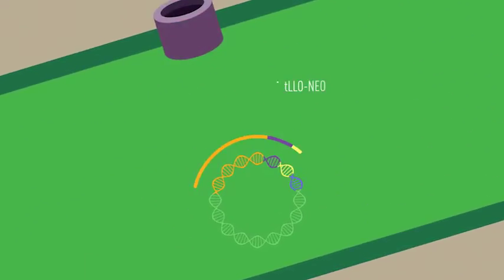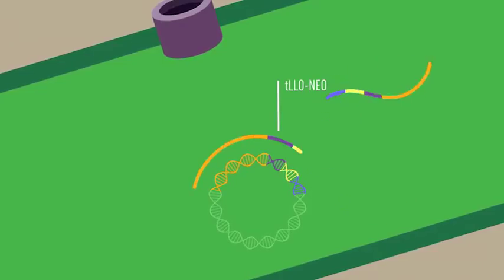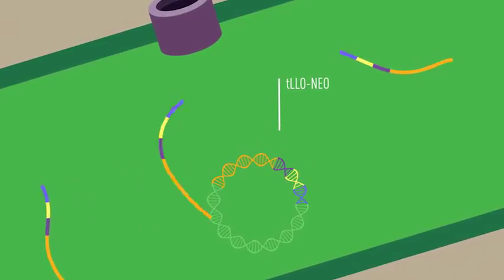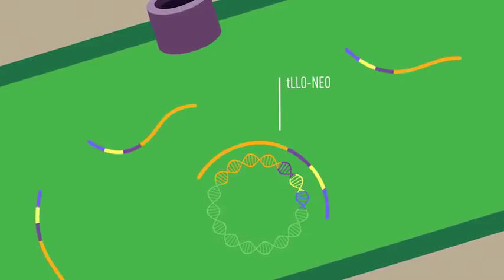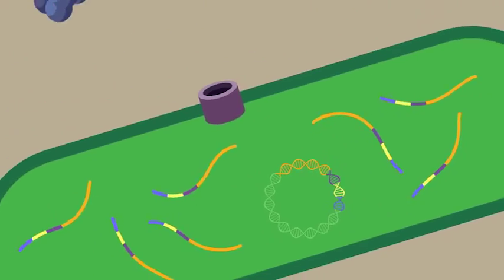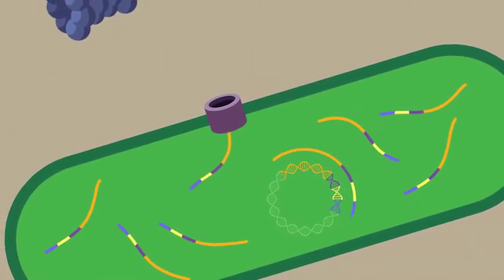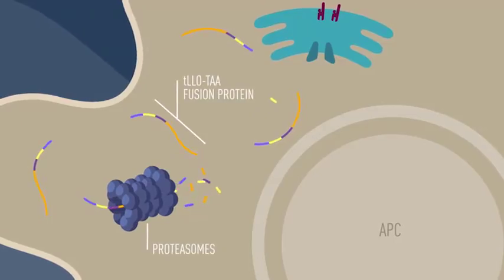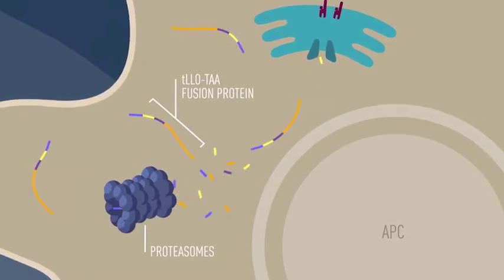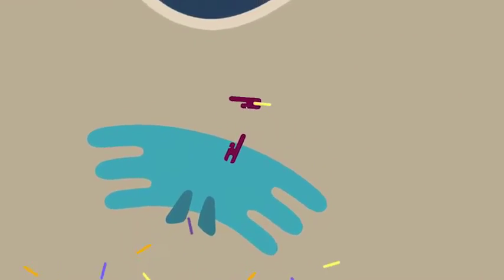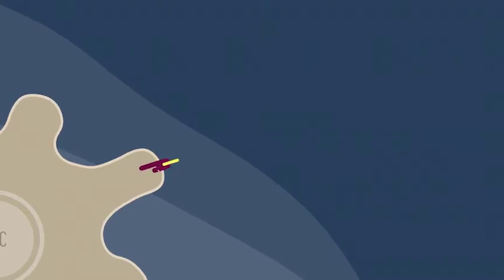Inside the bacterium, TLLO and neoepitopes are expressed from the recombinant plasmid. Since each bacterium has multiple copies of the plasmid, a large quantity of TLLO and neoepitopes can be generated. The proteins are secreted by Listeria monocytogenes and processed by the proteasomes. The neoepitope fragments bind to MHC molecules and are presented to T cells.